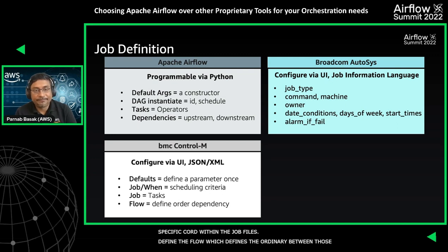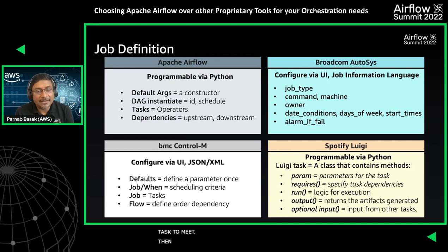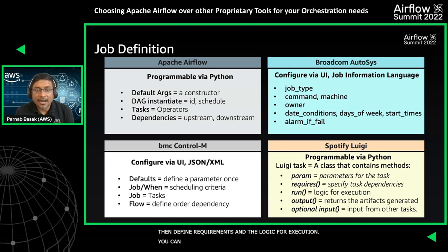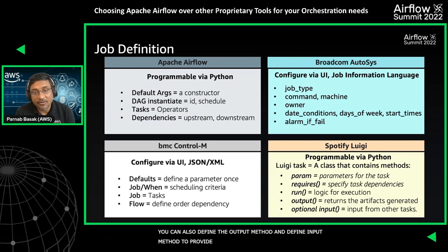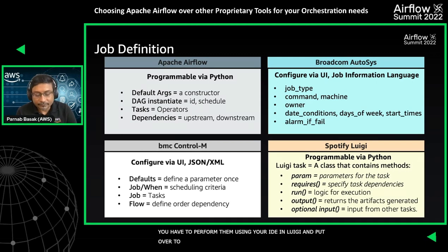In Spotify's Luigi, like Apache Airflow, this is programmable via Python. You create a Luigi Task class containing several methods: the parameters method for task inputs, the requires method defining task dependencies, the run method for execution logic, the output method defining generated artifacts, and the input method for any task inputs needed. Overall, both Autosys and Control-M allow you to use the UI to easily configure jobs and schedules, while Airflow and Luigi require authoring in your IDE and exporting to the respective systems.